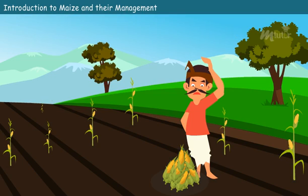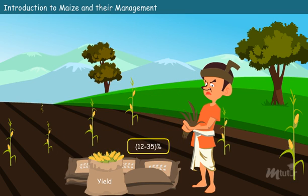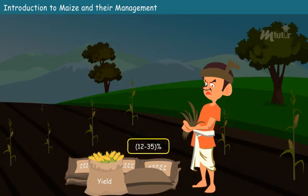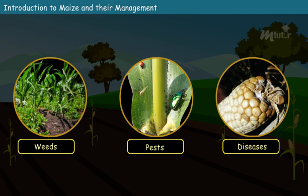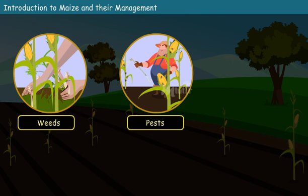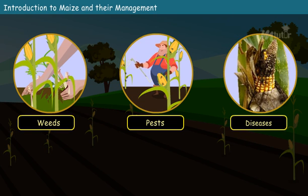This is because of the uncertainty in the yield that we attain during each and every harvest. As per a recent study, most maize farmers incur a loss of 12–35% in yield because of weeds, pests, and diseases. Although we are able to control the weeds and pests through some conventional and trained techniques, diseases still remain a challenge to us.